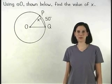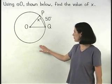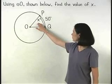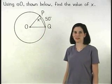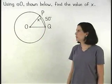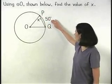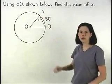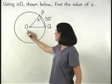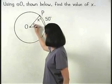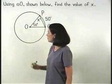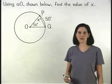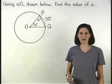In this example, we're given a diagram of circle O and we're asked to find the value of x. We're also given that the measure of arc PQ is 50 degrees, so we know that the measure of angle O is also 50 degrees because the measure of a central angle is equal to the measure of its minor arc.